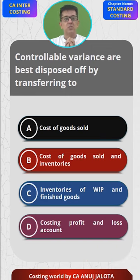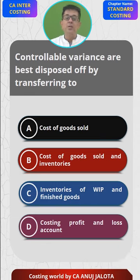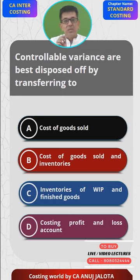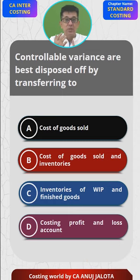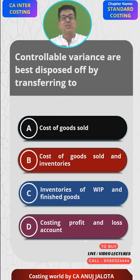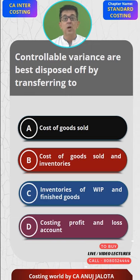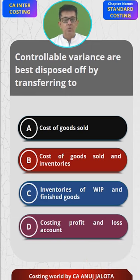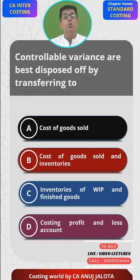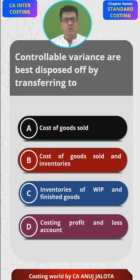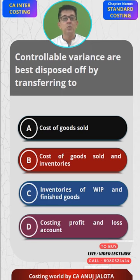Controllable variance is our loss. The uncontrollable part should be charged to the goods, because material cost should have been Rs. 2, but due to abnormal factors it became 2.5. This 0.5 should increase our cost, so it should be charged to cost of goods sold and inventories — like your supplementary method. But the other 0.1 is our mistake, so it should be charged to our costing profit and loss account. All controllable variances — those we could have controlled but did not — are our losses, not cost increases, so they should be charged to costing P&L.